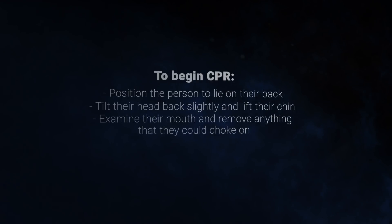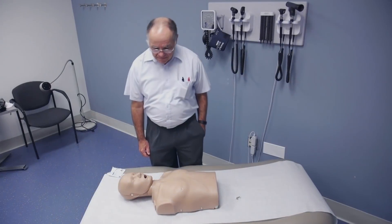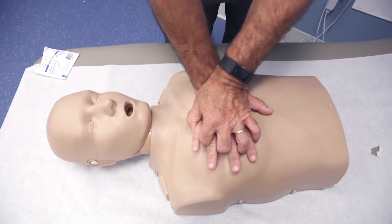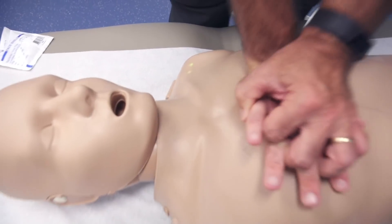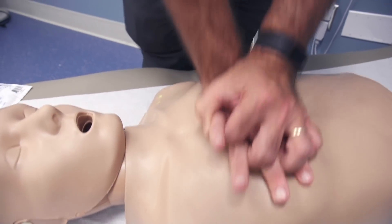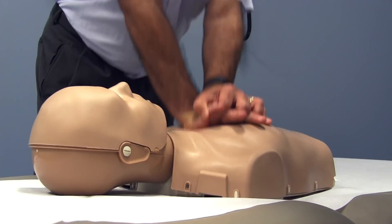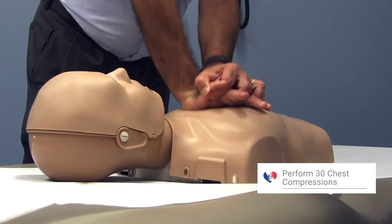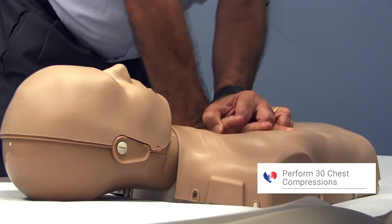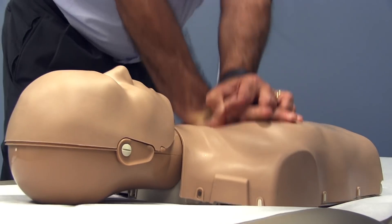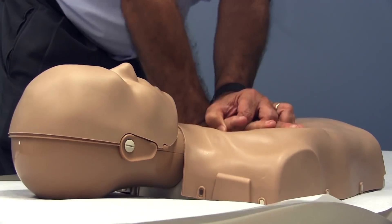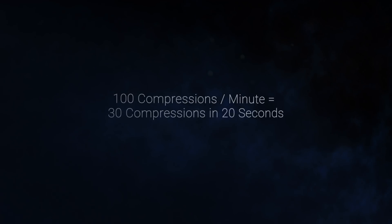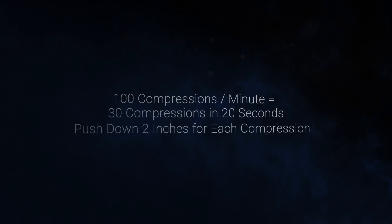Be sure to examine their mouth and remove anything that they could choke on. Start chest compressions by gripping your hands with interlocked fingers on top of one another over the middle of the person's chest, just over the sternum or breastbone. Use your body weight to perform the compressions, delivering 30 chest compressions before switching to rescue breaths. It may be helpful to count out loud. Chest compressions should be delivered at a rate of about 100 compressions per minute, or just under 20 seconds for 30 compressions. Push down two inches for each compression and be sure to keep your elbows locked.